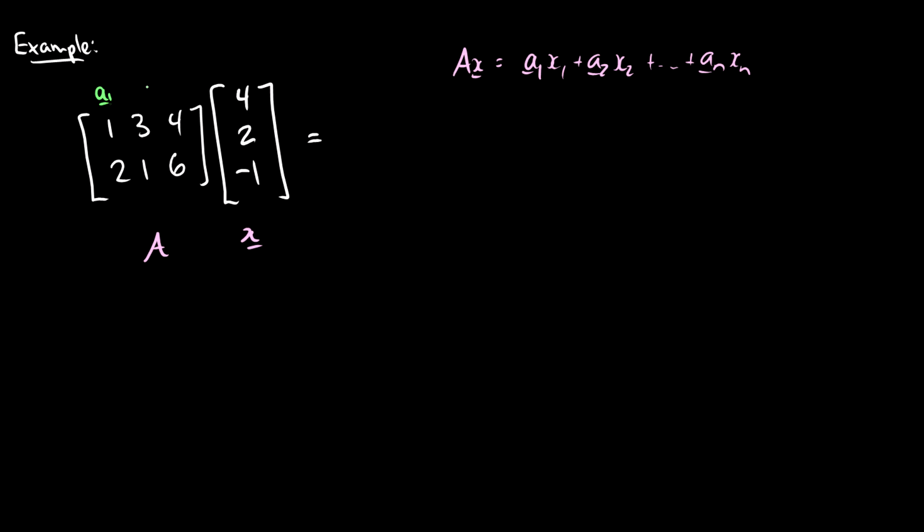So this first column we'll call A1, second column we'll call A2, third column we'll call A3, and we'll label these elements in the vector x. So we'll call this one x1, x2 and x3. So this should be a little bit easier to see what we're doing here. So in this case we're going to have x1 A1 plus x2 A2 plus x3 A3.